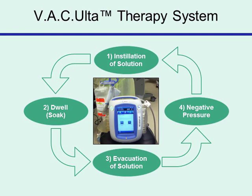The VAC Ulta therapy system has four key components: the instillation of solution; the dwell, or the time the solution is left to soak on the wound surface; the evacuation of the solution removed through the drainage tubing portal; and the application of negative pressure therapy, which takes up the majority of the cycle. For example, the negative pressure therapy will often be for several hours, while the dwell time and instillation will be just for a few minutes.